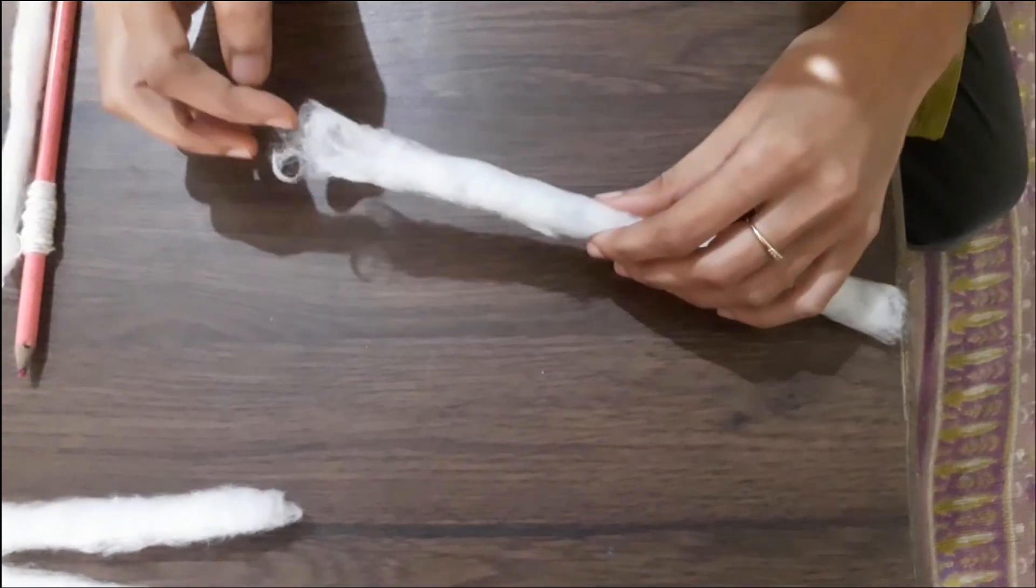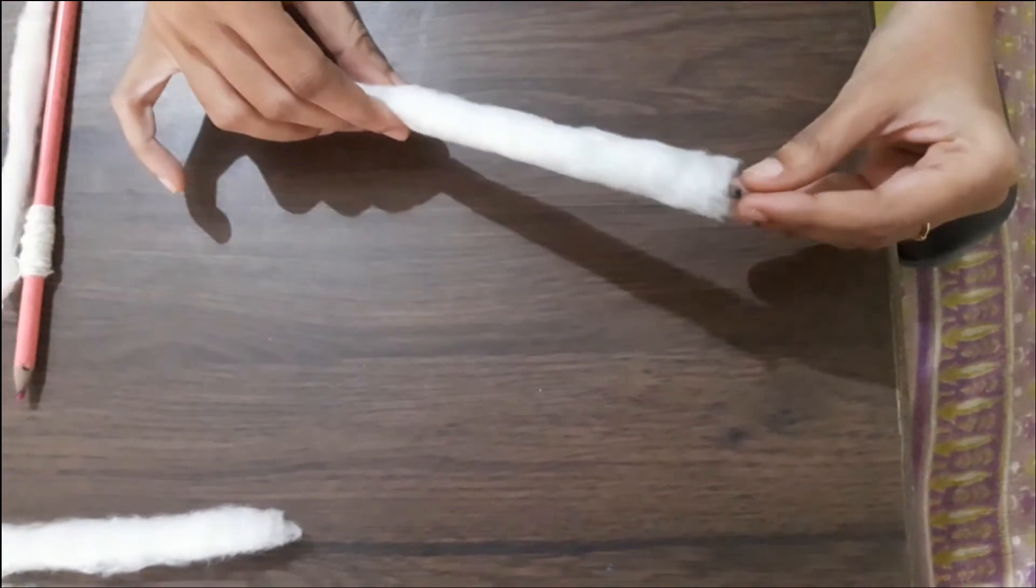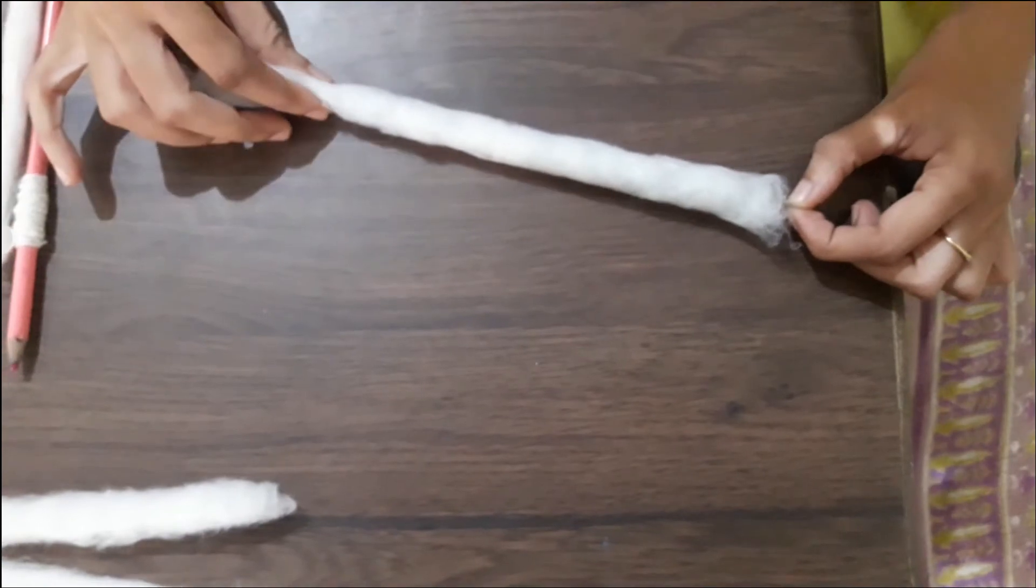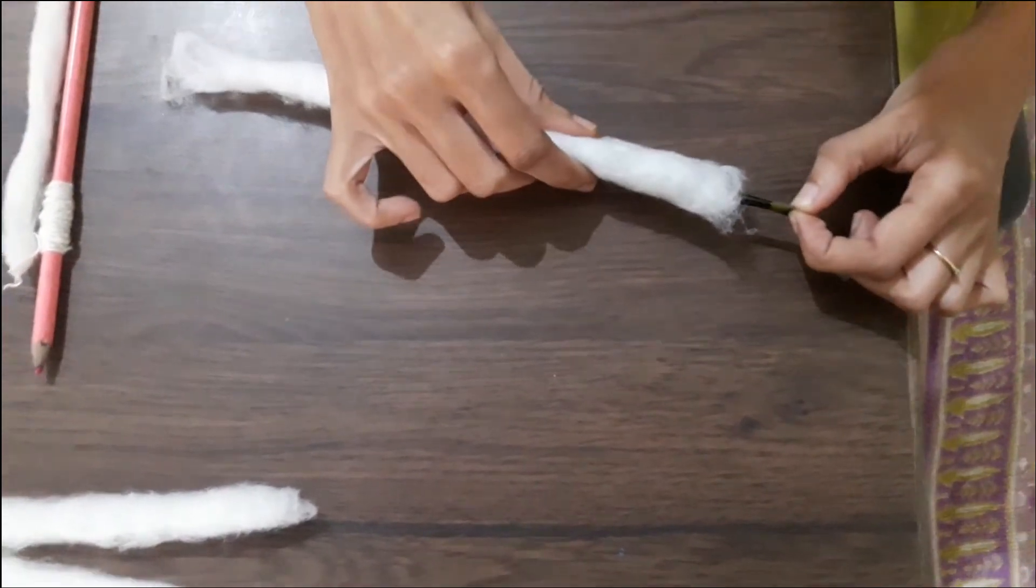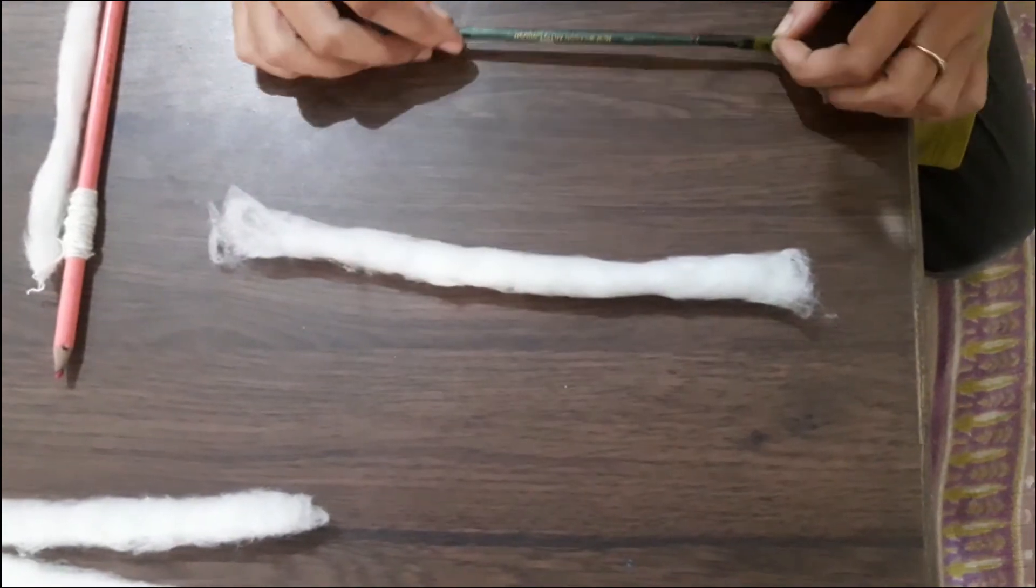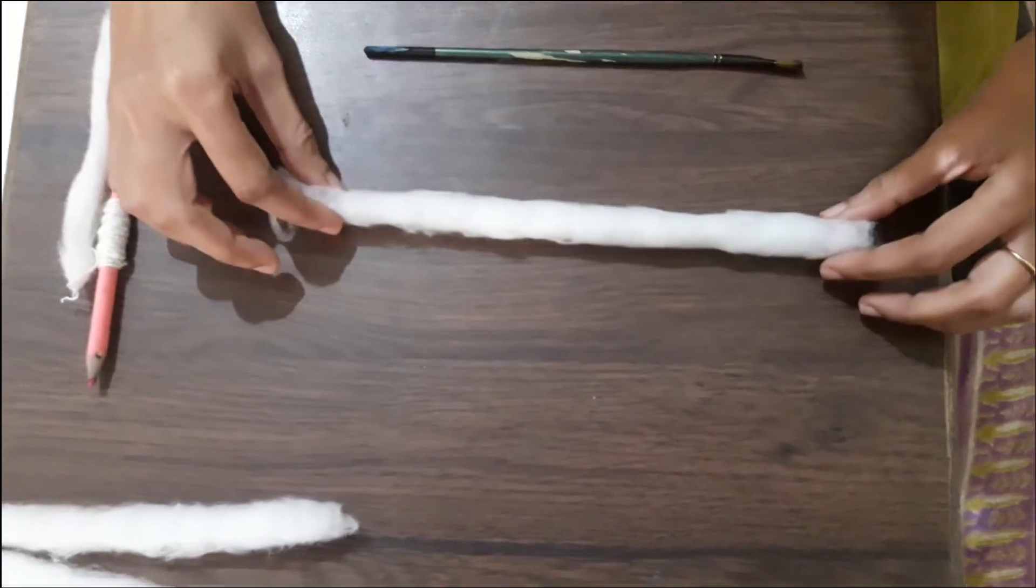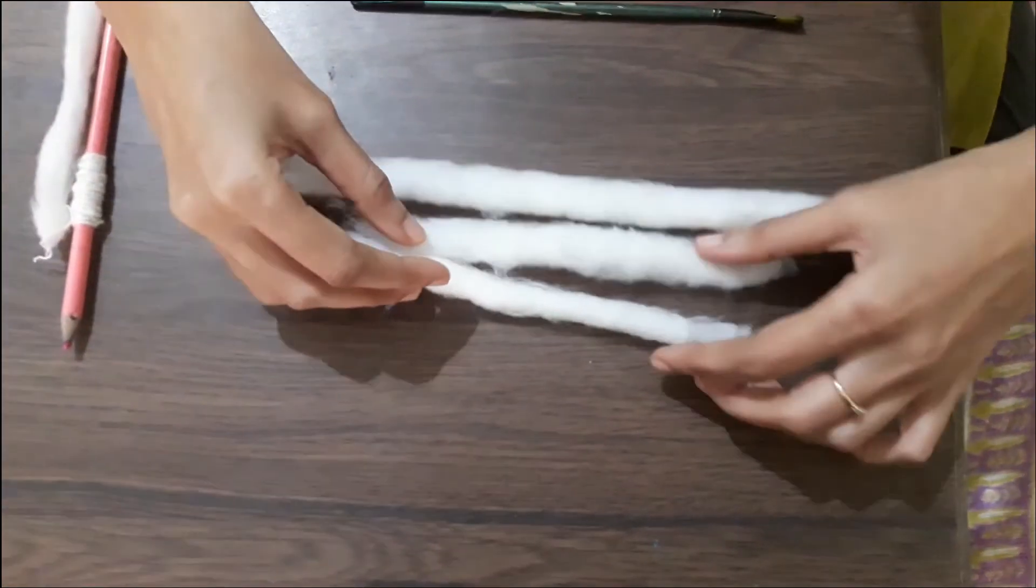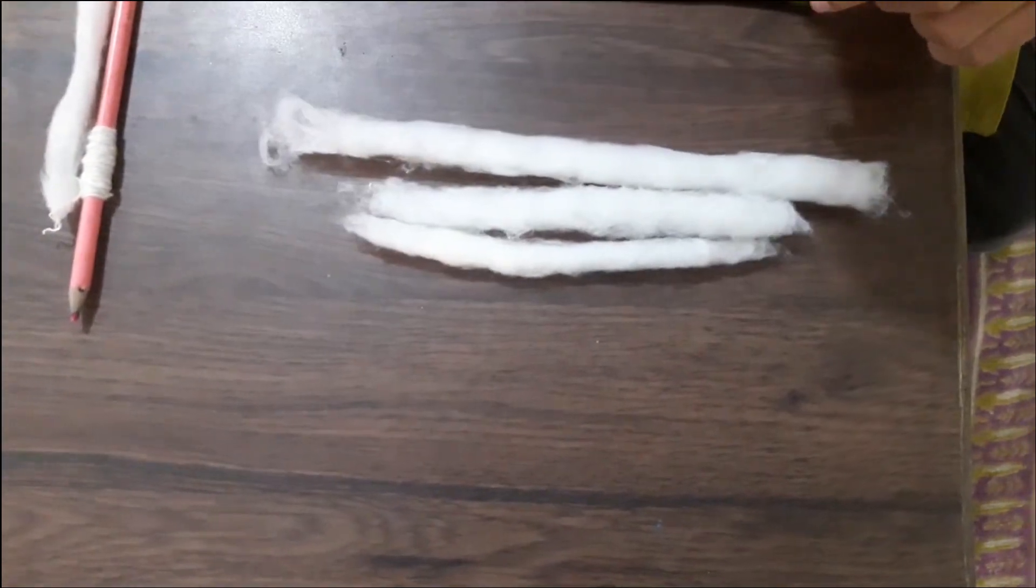Now, here is my sliver. I will try to pull out my brush softly. Here. So this is the sliver from where I will spin the yarn. This is what is made by hand with surgical cotton.